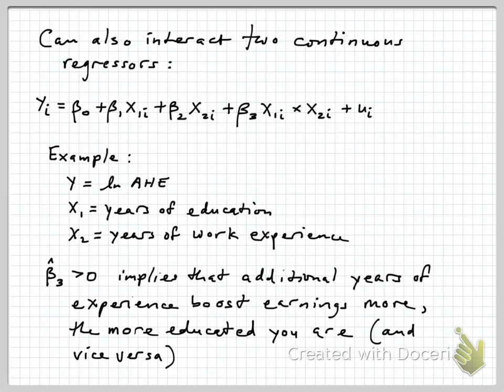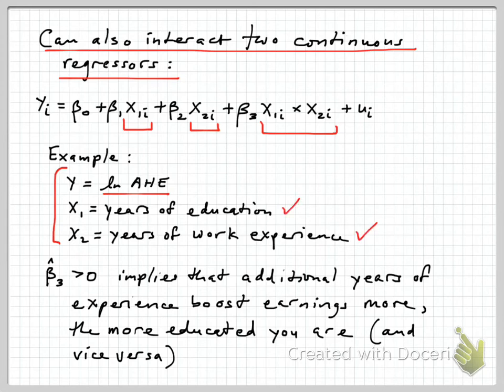Finally, we could also interact two continuous regressors, so just calling them x1 and x2. We form the interaction term as just their product, and that's quite straightforward as well in terms of implementing it with real data. Here's a simple example. Y is the log of average hourly earnings, let's make x1 the years of education and x2 the years of work experience, something we've looked at already.